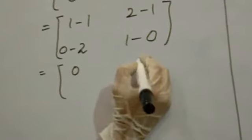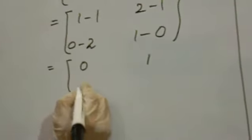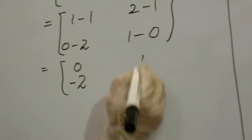1 minus 1, 0. 2 minus 1, 1. 0 minus minus 2 is minus 2. 1 minus 0, 3 minus 1. Now find out the transpose.